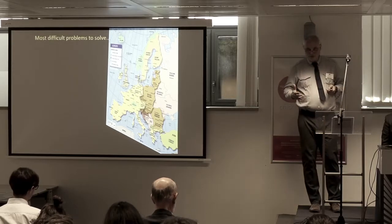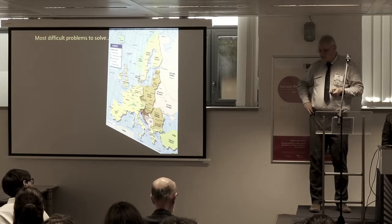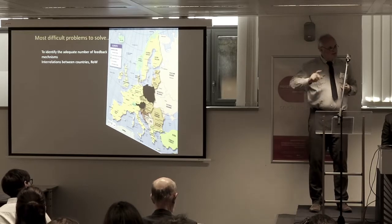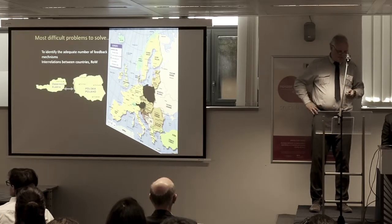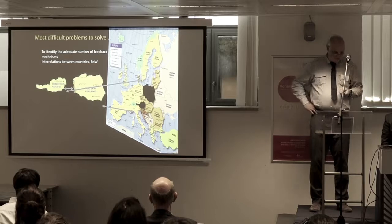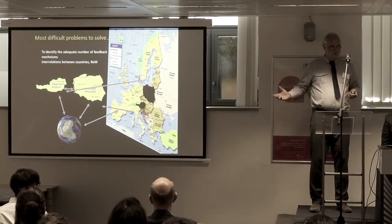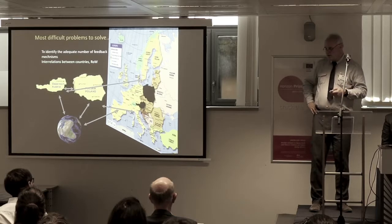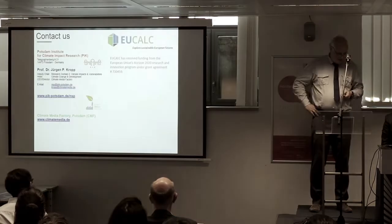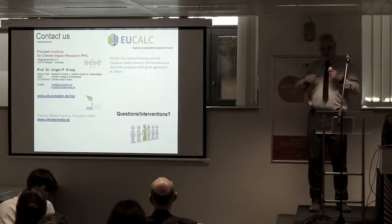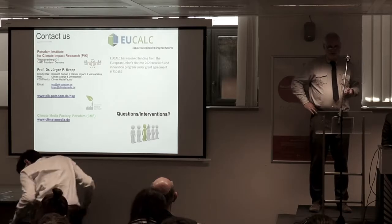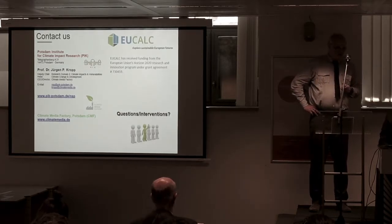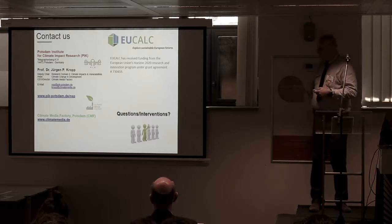The most difficult problems to solve have to do with the resolution — the downscaling to 28 countries. For example, if we take two countries like Poland and Austria and want to relate them to each other, the question is how are they related, what does it mean in terms of their relation to the rest of the Union, and what does it imply for the rest of the globe? These are open questions we hope to solve, for example by application of transfer matrices. This gave you a brief overview of the European Calculator project.